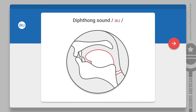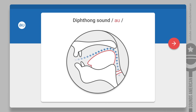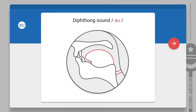The first sound in a diphthong is typically longer and louder. So make sure that you pronounce a nice and full AH and then connect it to the UH. Now let's glide from the AH to the UH and blend the two sounds together.